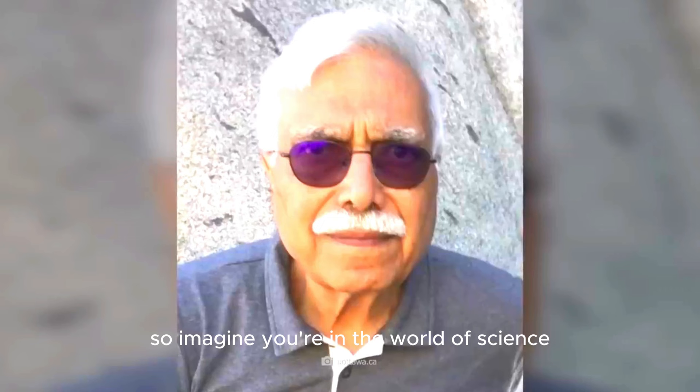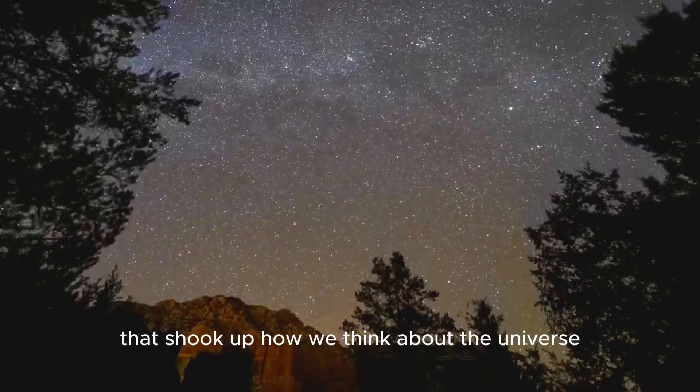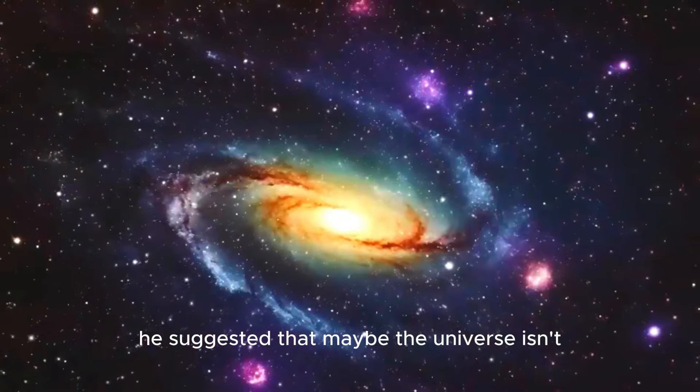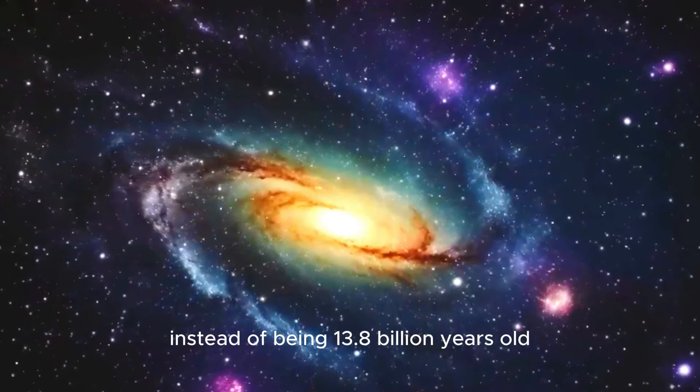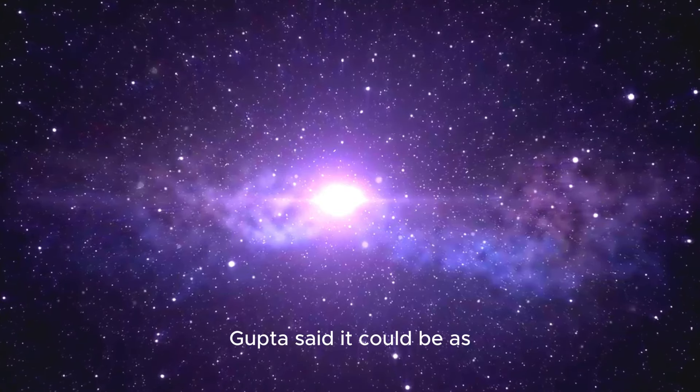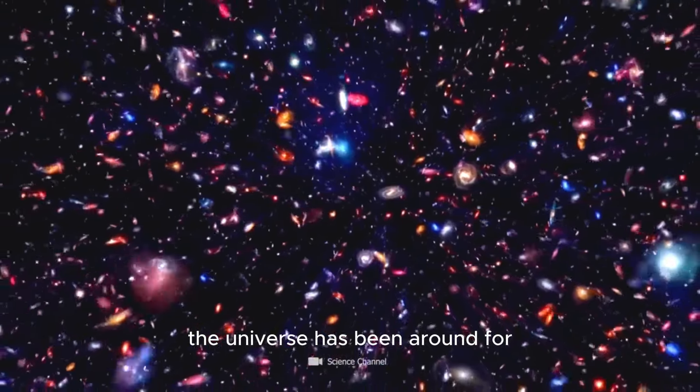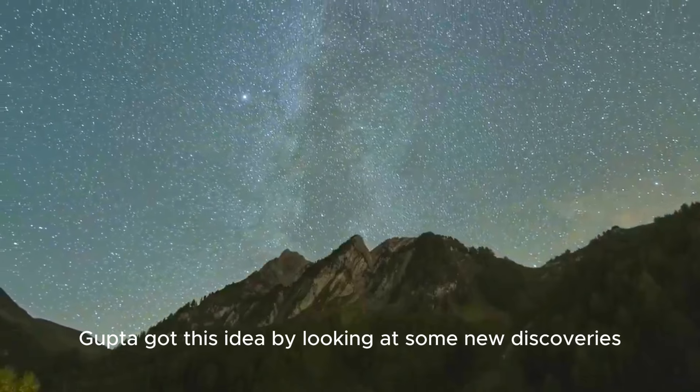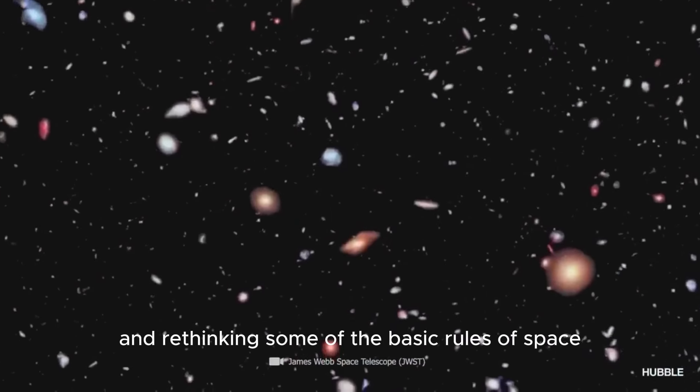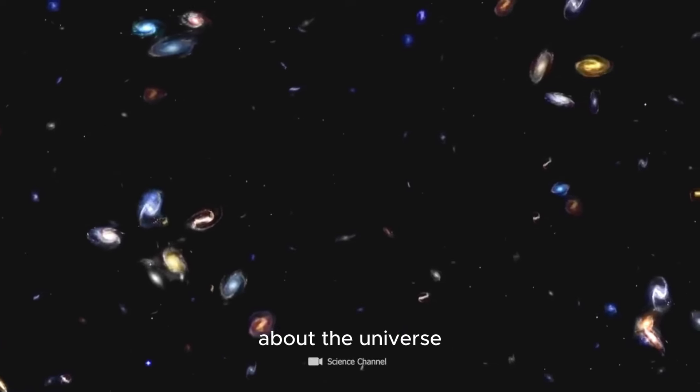So imagine you're in the world of science, and there's this researcher named Rendra Gupta. Well, in 2023, he came up with this really cool idea that shook up how we think about the universe. He suggested that maybe the universe isn't as young as we thought. Instead of being 13.8 billion years old like everyone believed, Gupta said it could be as old as 26.7 billion years or even older. That's like saying the universe has been around for way longer than we ever imagined. Gupta got this idea by looking at some new discoveries, like Zwicky's tired light thing, and rethinking some of the basic rules of space.